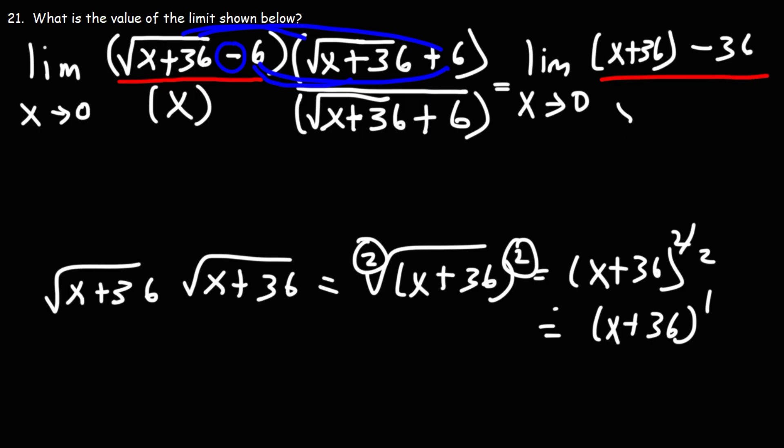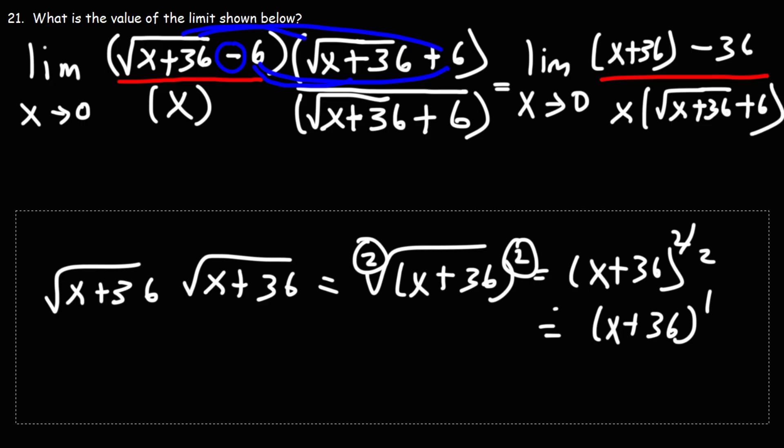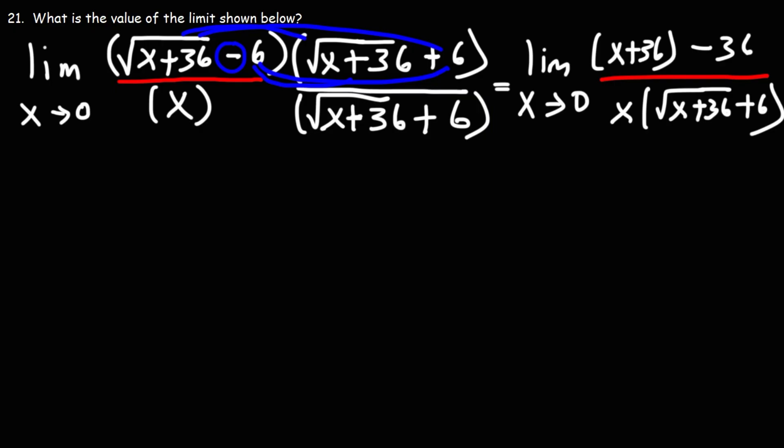On the bottom, we'll have x times the square root of x plus 36 plus 6. So this is going to equal the limit as x approaches 0. Positive 36 and negative 36, they add up to 0. So we're left with this.